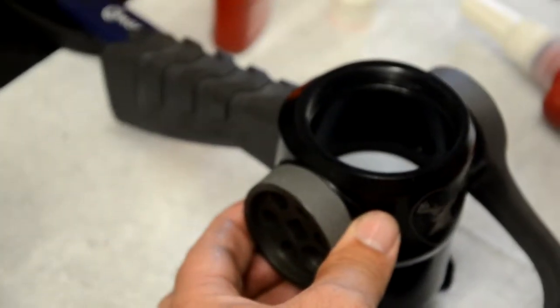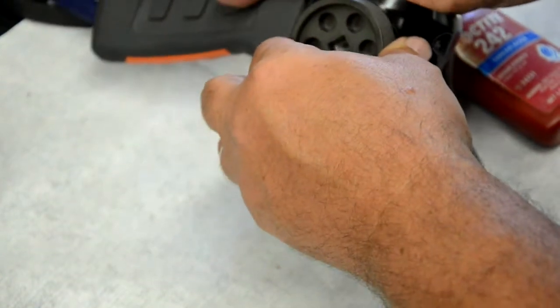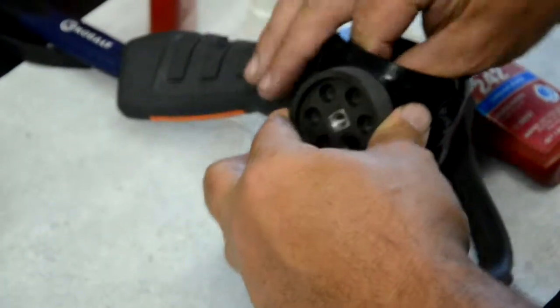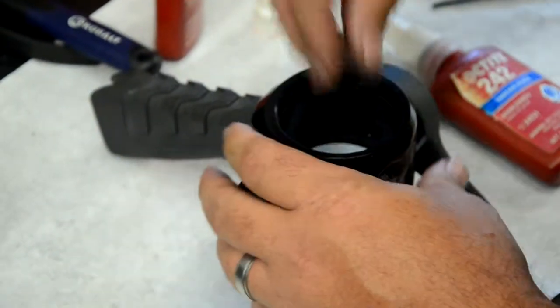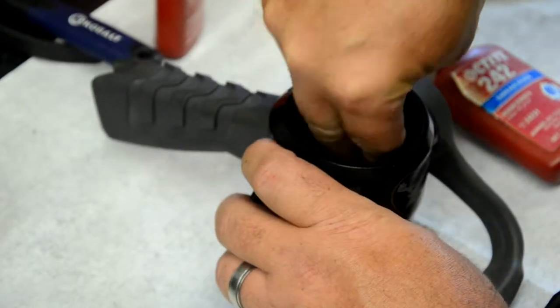Next, install the actuator shafts by pushing them through the inside of the nozzle body. Make sure the flats of the actuator shaft run parallel to the waterway. If they're not, we won't be able to install the ball valve in the next step.